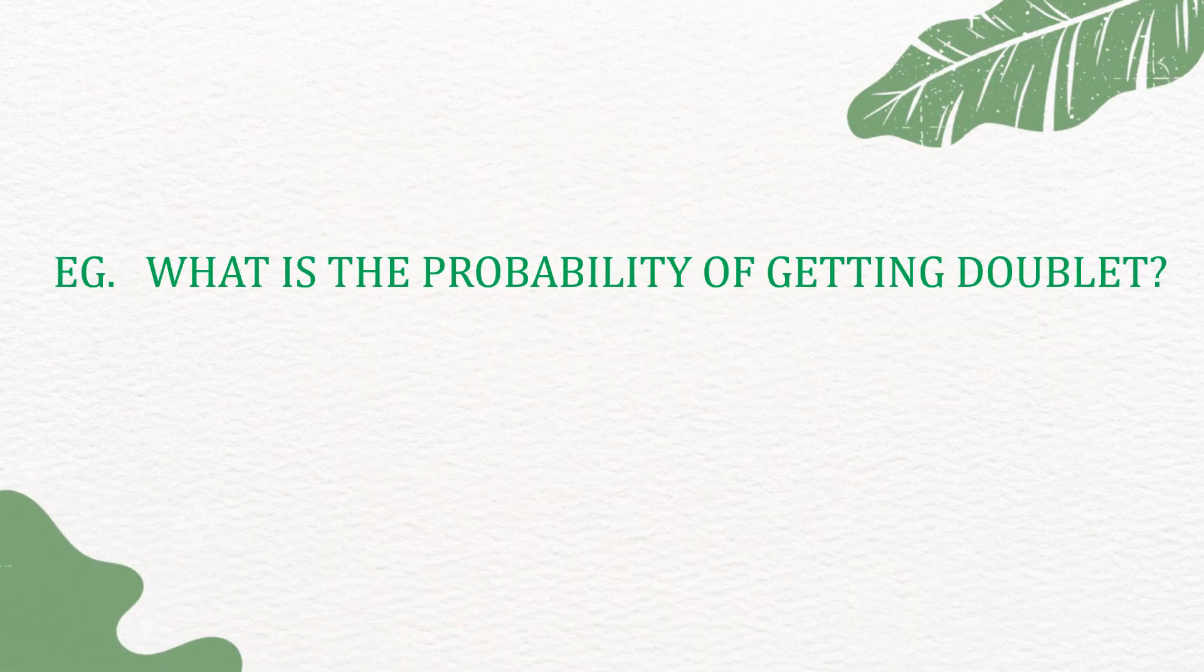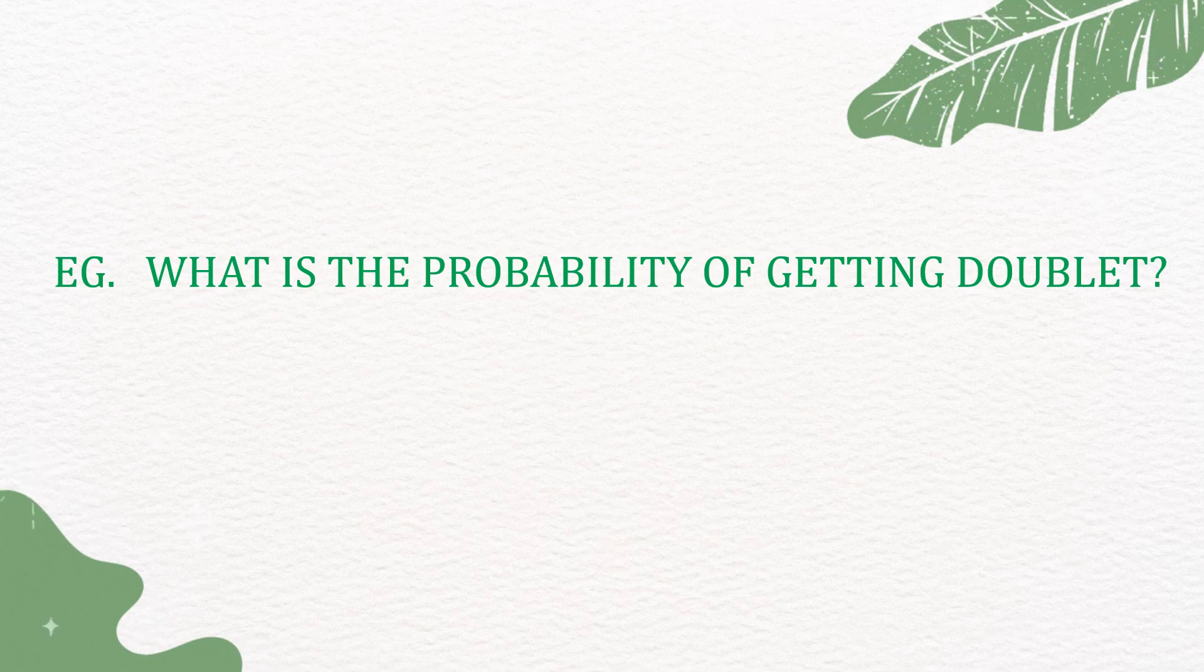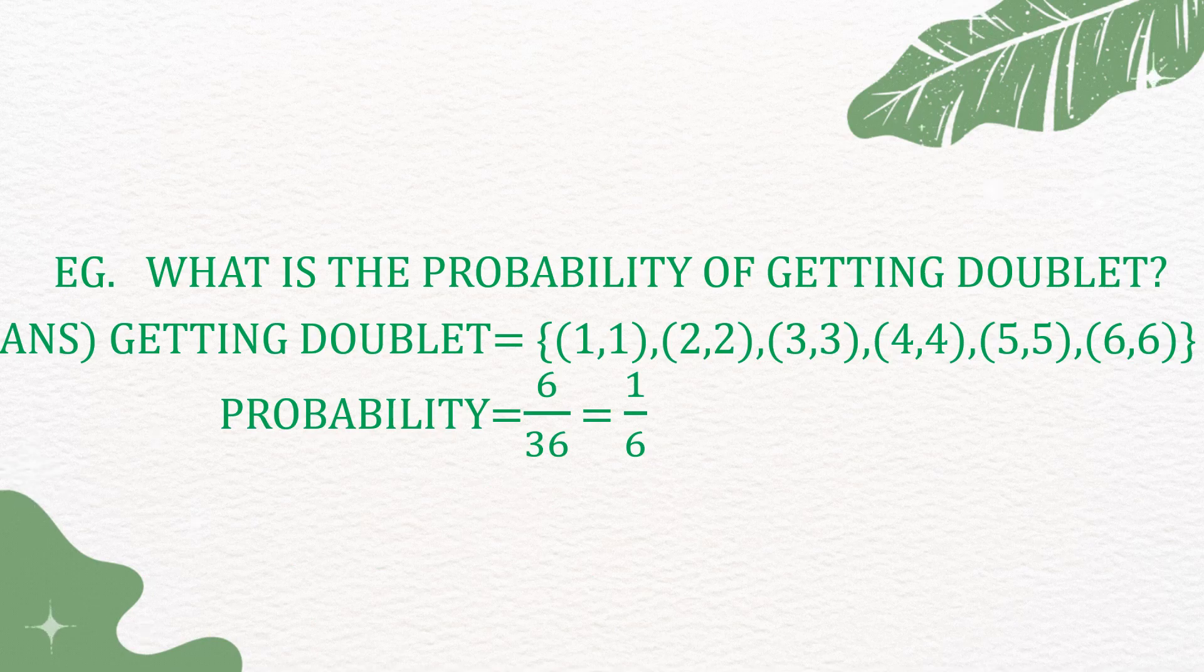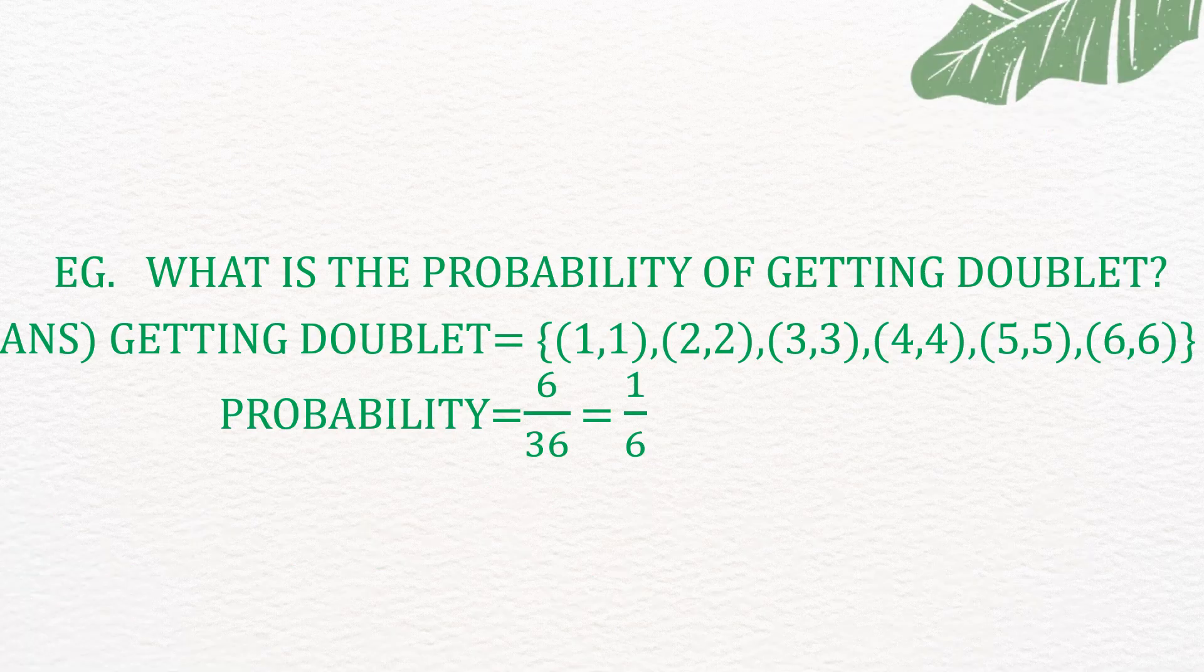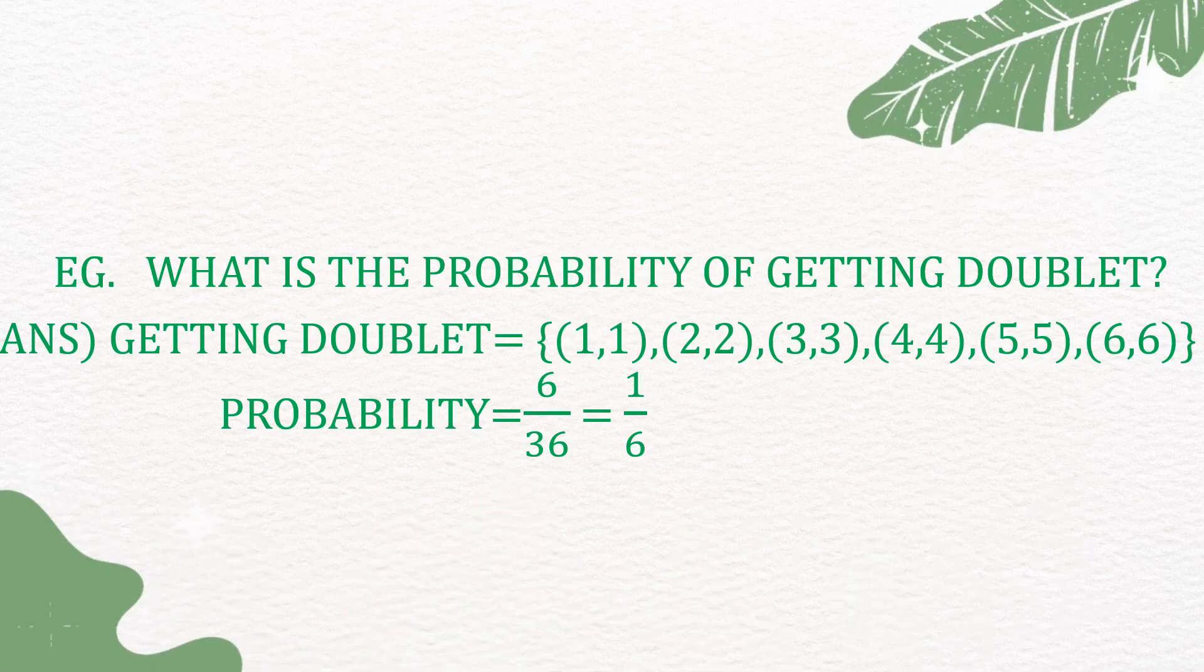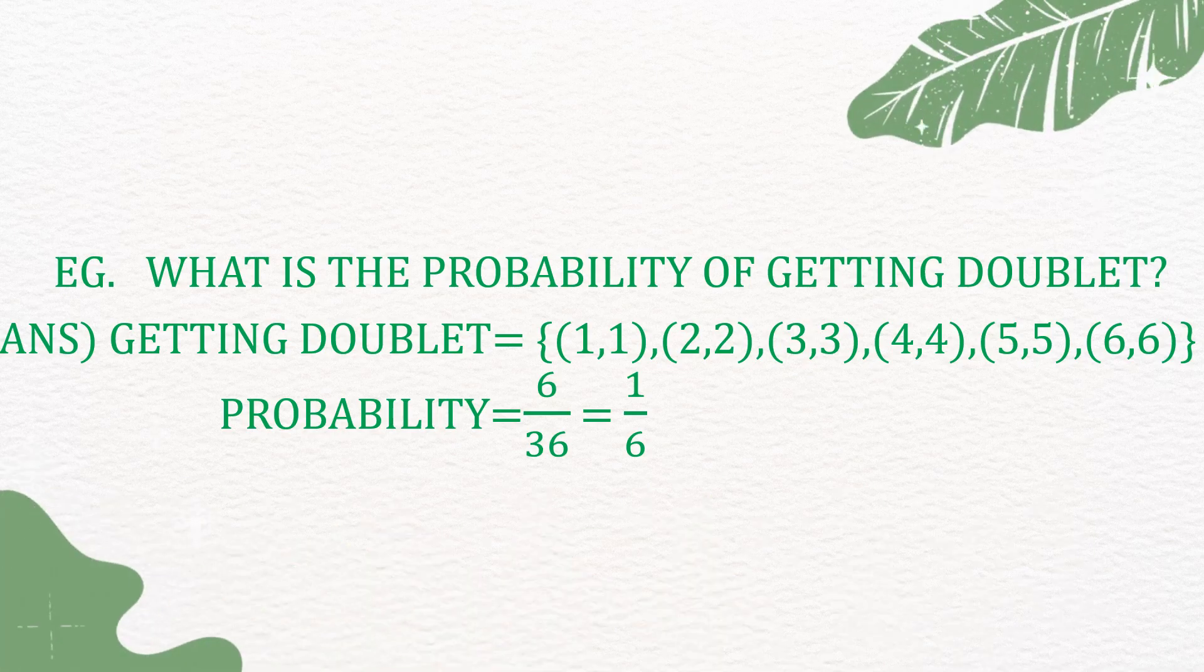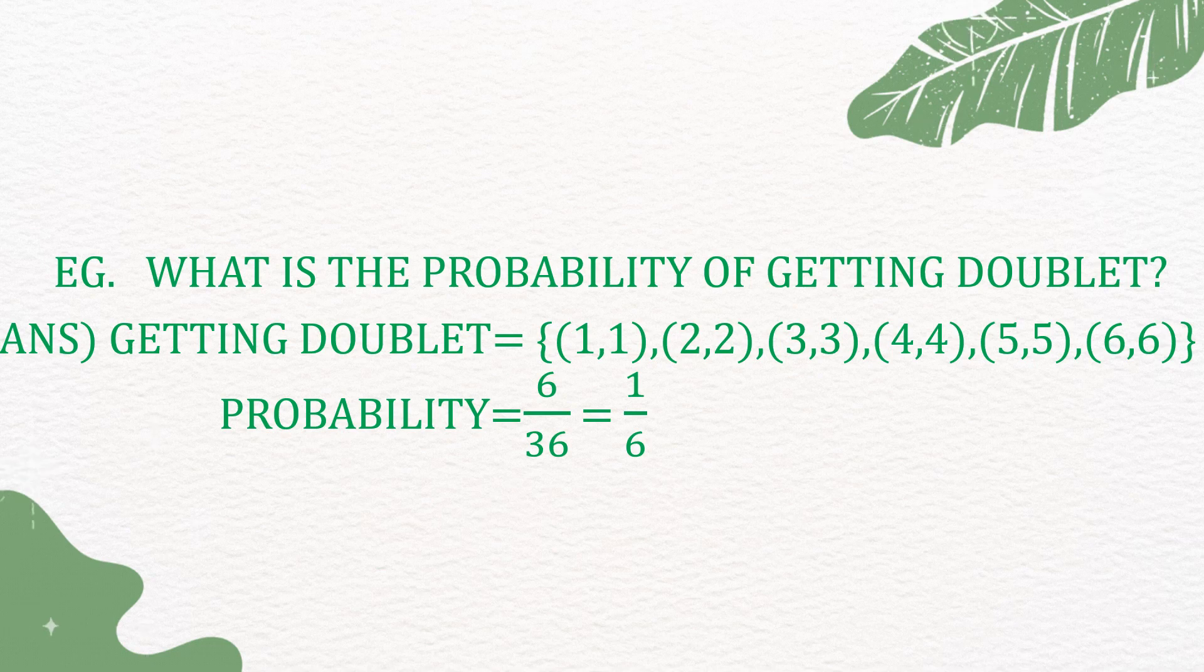For example, what is the probability of getting a doublet in 2 dice? The sample space for doublets is {(1,1), (2,2), (3,3), (4,4), (5,5), (6,6)}. So, the probability is 6/36 which is equal to 1/6.